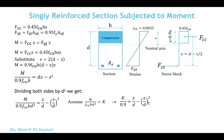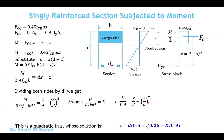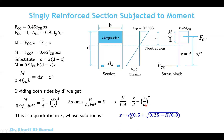This is a quadratic equation in z, and from its solution we can get the value of z, which is the lever arm between the compression and tension forces in the cross section. Solving the quadratic equation gives: z equals d multiplied by 0.5 plus the square root of (0.25 minus k over 0.9). Remember that k equals m over Fccu b d squared.